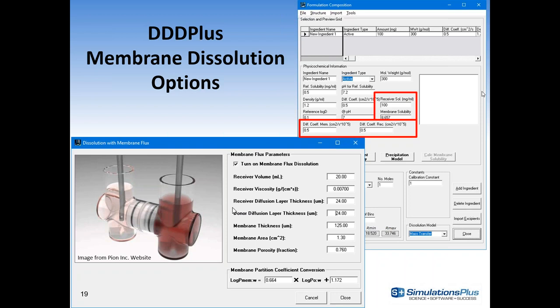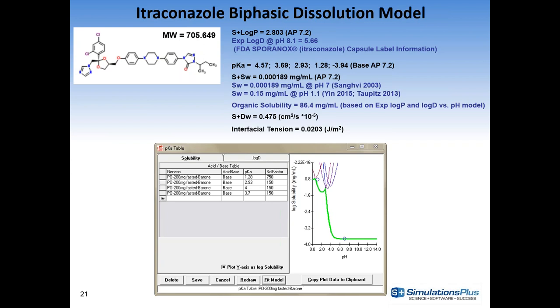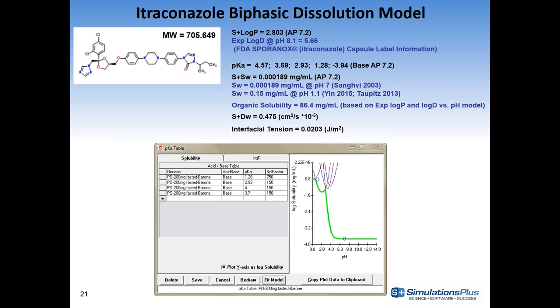For the biphasic dissolution experiment, it's similar to membrane dissolution except there's no membrane. We go through an example with itraconazole, a Class 2 low-solubility compound with extremely low solubility at physiologic pH — approximately 100 nanograms per mL predicted by the general solubility equation, with a log P close to 6. It has several pKas, is soluble in gastric conditions, and precipitates at intestinal pH near 6 to 6.5.